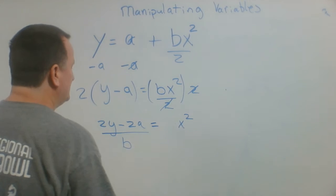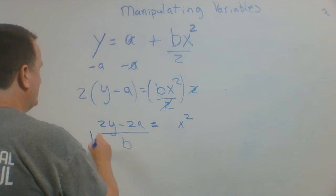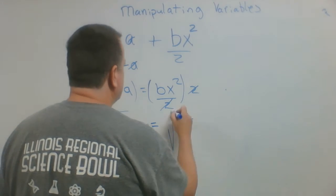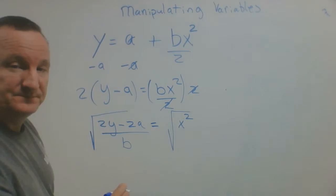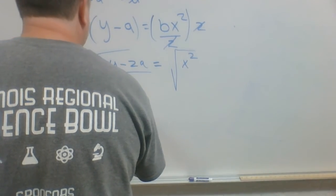x squared, now to get x by itself, I take the square root of both sides. What I do then is I see that x now